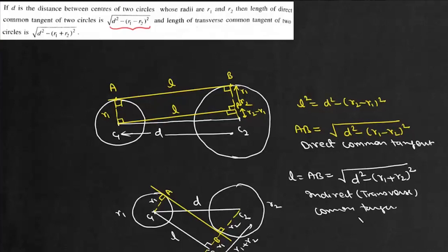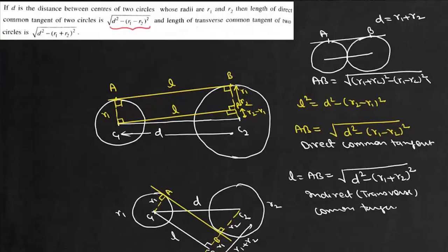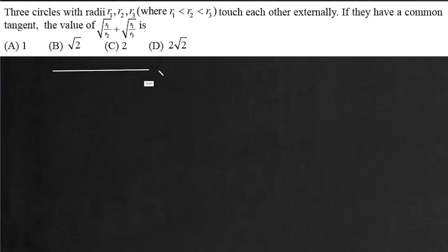There is one important case: when the two circles touch each other externally. When two circles touch each other externally, the distance between centers d is given as r1 + r2. So in this case, length of direct common tangent AB = √((r1 + r2)² − (r1 − r2)²). Here r1² and r2² cancel, so it equals 2√(r1·r2). If two circles touch each other externally, the length of the direct common tangent is 2√(r1·r2).